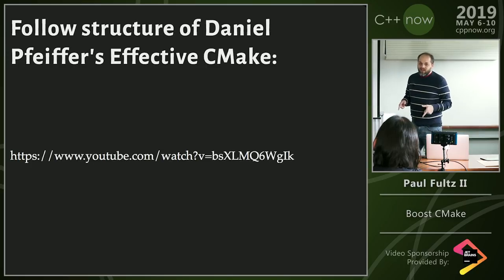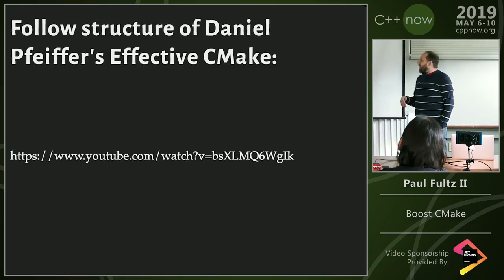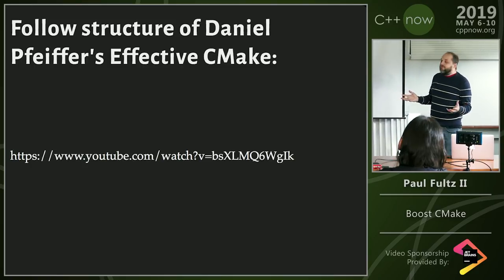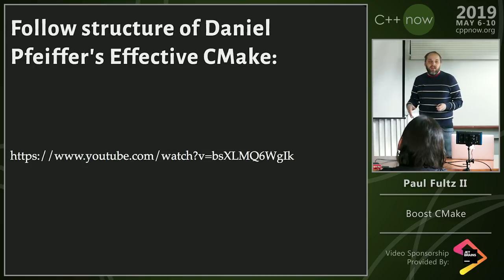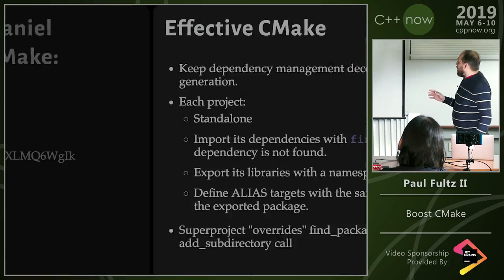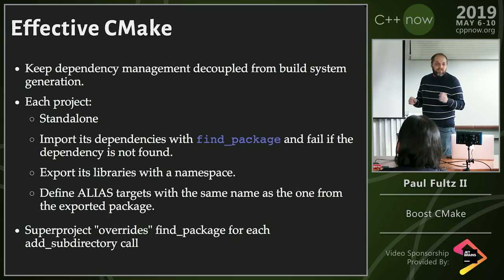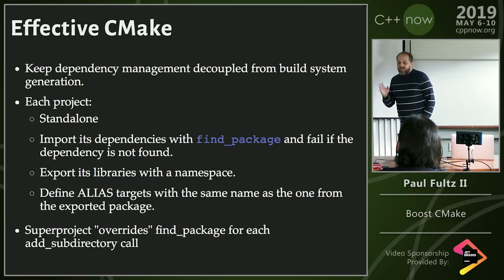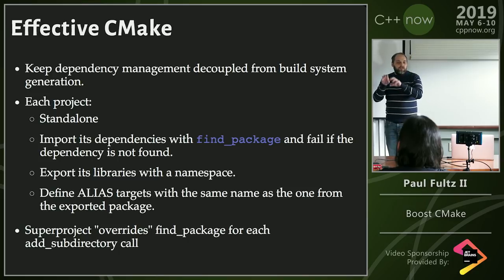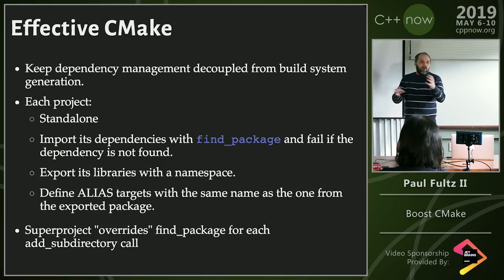The structure we want to follow for Boost is from Daniel Pfeiffer's talk at C++ Now called 'Effective CMake,' which describes how to structure build dependencies. I highly suggest watching it. Key items: each project you create should be standalone — you pull it down, run CMake, build it, install it, without needing a super project infrastructure. It also imports dependencies with find_package and fails if the dependency is not found, so users can put dependencies almost anywhere without hardcoded paths.